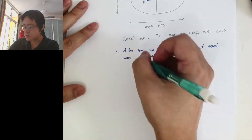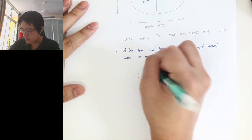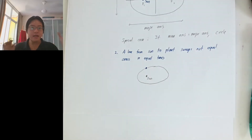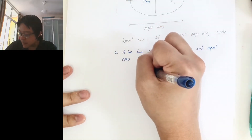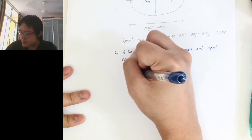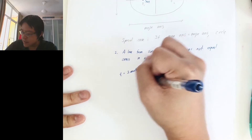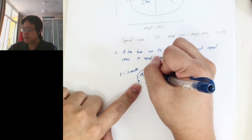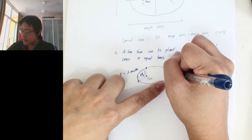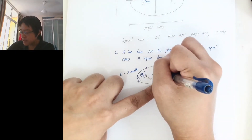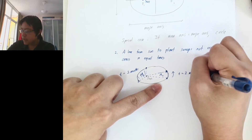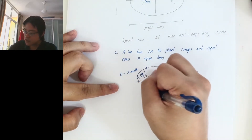Let's draw another ellipse to demonstrate. The sun is on one of the foci. Let's say a planet is here, and within two months the planet goes from here to here — you can calculate the area swept in two months. If you consider another case where the planet starts elsewhere and also travels for two months, you can calculate another area. If both take the same time, the conclusion is that the two areas will be the same.